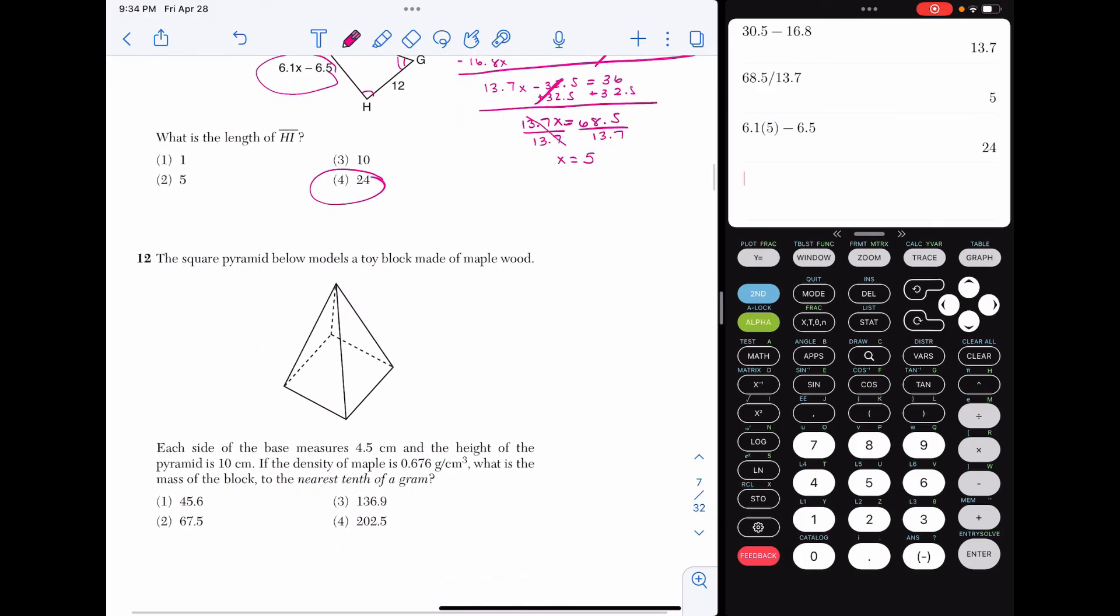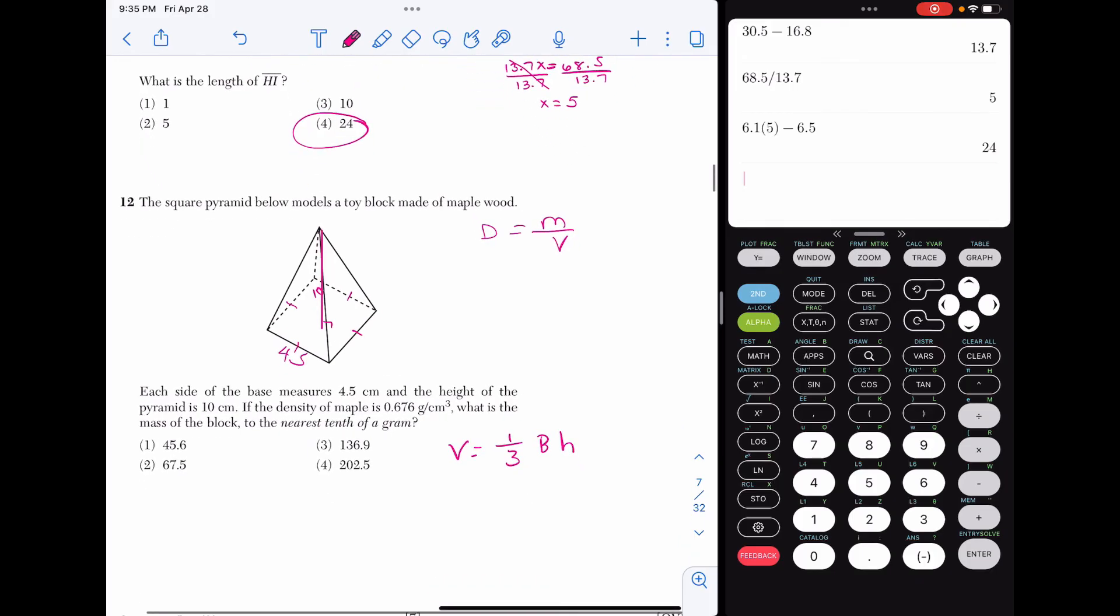Alright, number 12. The square pyramid below models a toy block made of maple wood. Each side of the base measures 4.5 centimeters, and we know it's a square, so they're all the same. The height of the pyramid is 10. And we are given the density of maple, and we want to find the mass of the block. So density is mass over volume. We're looking for the mass, and we know the density. So that means we have to find the volume first.